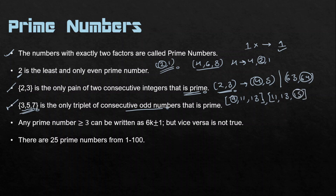If you continue checking, you will see that in any triplet of consecutive odd numbers (a 3k odd pattern), one number will always be a multiple of 3. So 2 and 3 are the only pair of consecutive integers that are both prime, and 3, 5, 7 is the only triplet, because one of them will always be a multiple of 3.